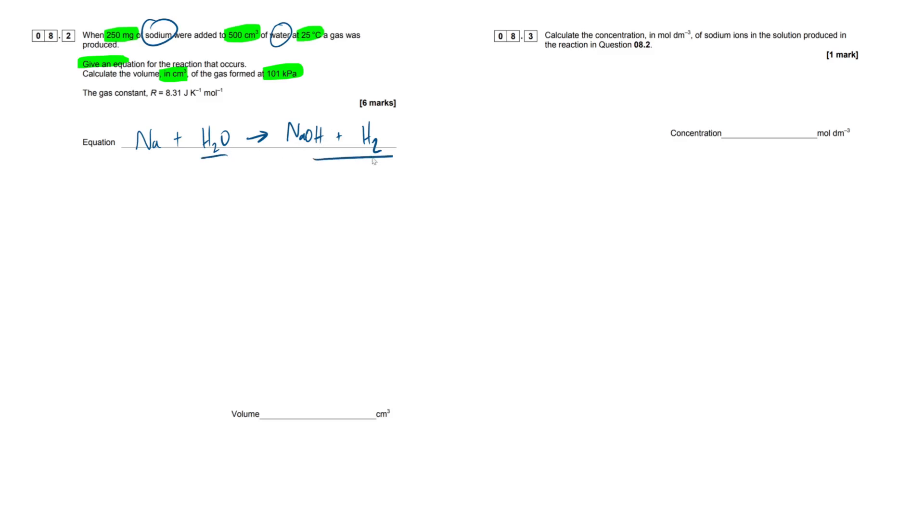So we've got two hydrogens on this side, we've got three on this side. So I'm just going to chuck a half mole coefficient in front of this hydrogen gas. Alternatively, you can just double everything up, whichever you find easiest. So that's our first mark in the bag.